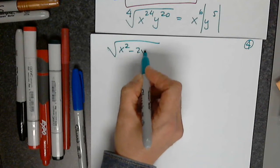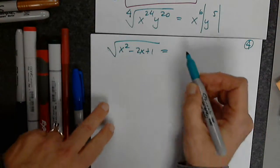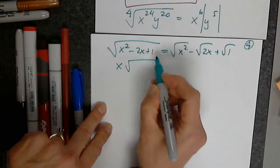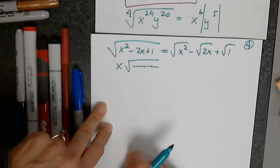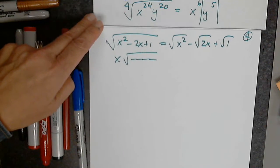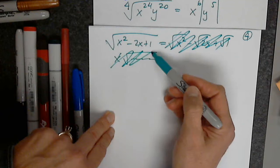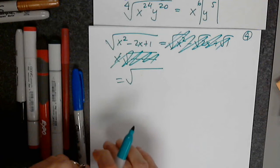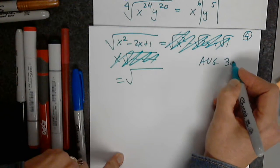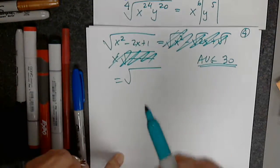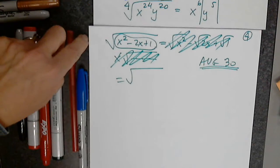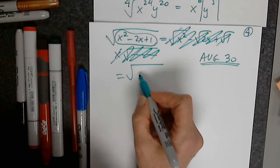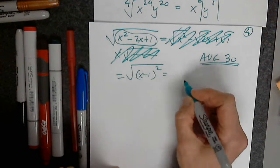The last one: the square root of x squared minus 2x plus 1. I even saw someone write x times the square root of something — that's not acceptable. So the square root of that expression: we have an agreement from day one, from August the 30th. What does this get replaced by? Then the answer is this.